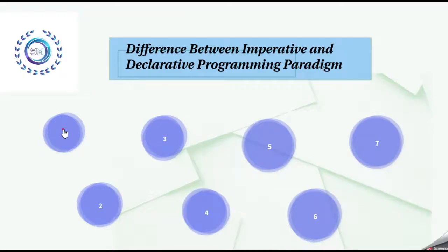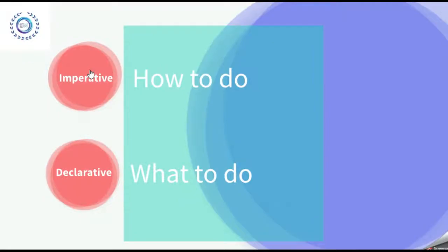Let's start with the first difference. Imperative programming is like how to do something and declarative programming is more like what to do. So the difference between imperative and declarative programming is related to how a program works versus what a program does.